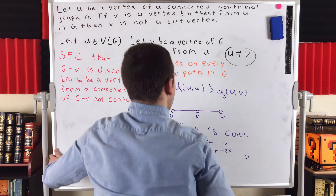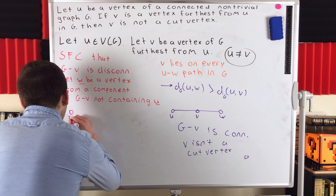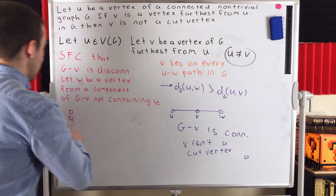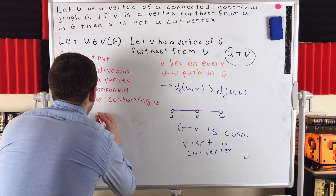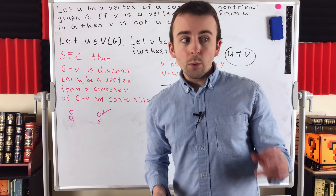So in a non-trivial connected graph, how does this imply that the graph must have at least two vertices that aren't cut vertices? Well, if we've got a non-trivial connected graph, it must have at least two vertices since it's non-trivial. So we could have a starting vertex we could call u. Then we could apply this theorem to u to get some vertex we could call v — v is a vertex of greatest distance from u. We've just shown that this vertex v must not be a cut vertex. Then we can apply the theorem again to the vertex v, and we're guaranteed to get a different vertex when we apply the theorem to v.